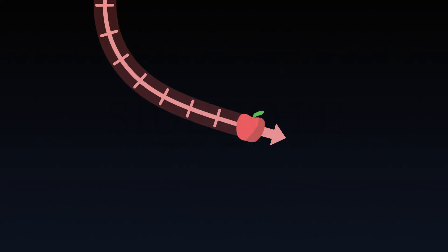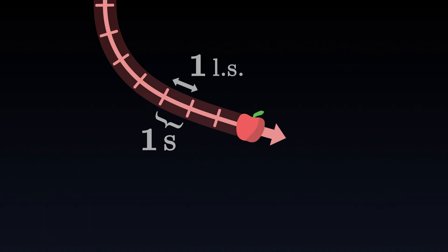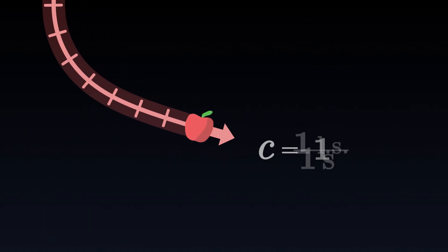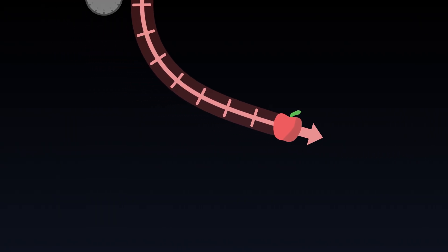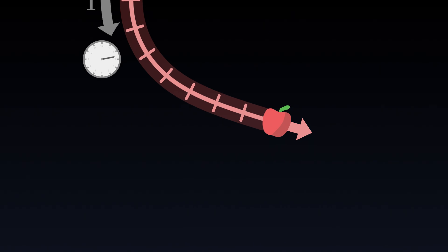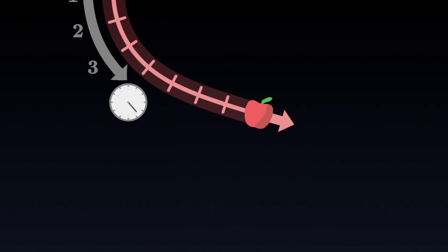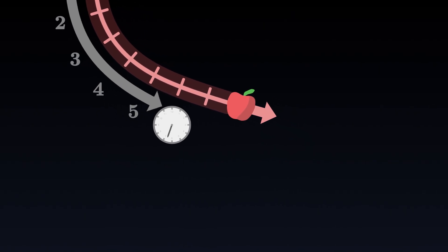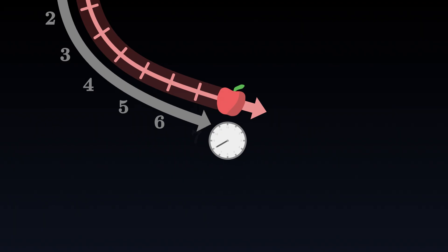When using coherent units, for example if we measure time in seconds and distances in light seconds, the speed of light is precisely one. This simply means that time is a measure of distance. The proper time of an object simply measures the distance travelled through space-time. For each second of proper time, the apple travels one light second through space-time.